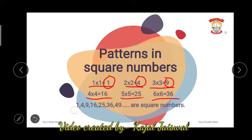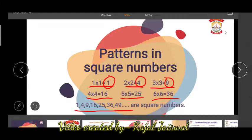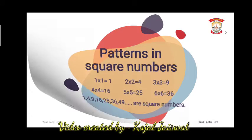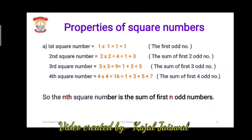So you can see 1, 4, 9, 16, 25, 36, 49 — like this there is no end to the square numbers. After this, in the properties of the square number we will understand what patterns are being followed in the square numbers.